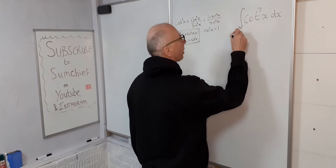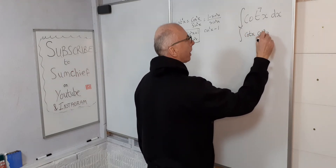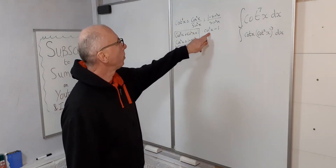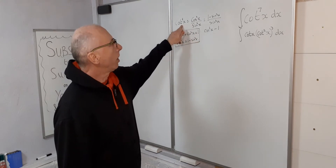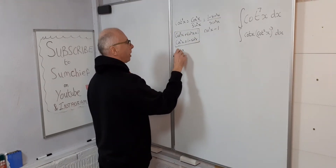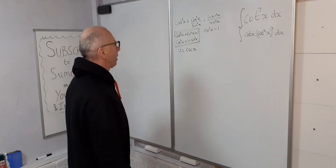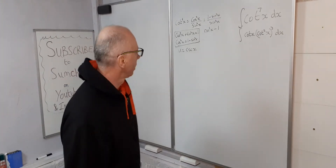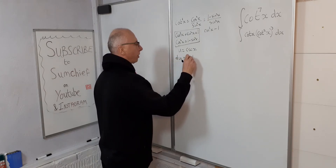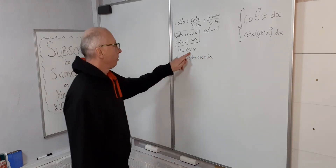So now we have cot(x) · cot(x) · cot³(x) dx. We'll let u equal csc(x). Now we need to find the derivative of csc(x) — that's a standard derivative — so du equals minus cot(x) · csc(x) dx.